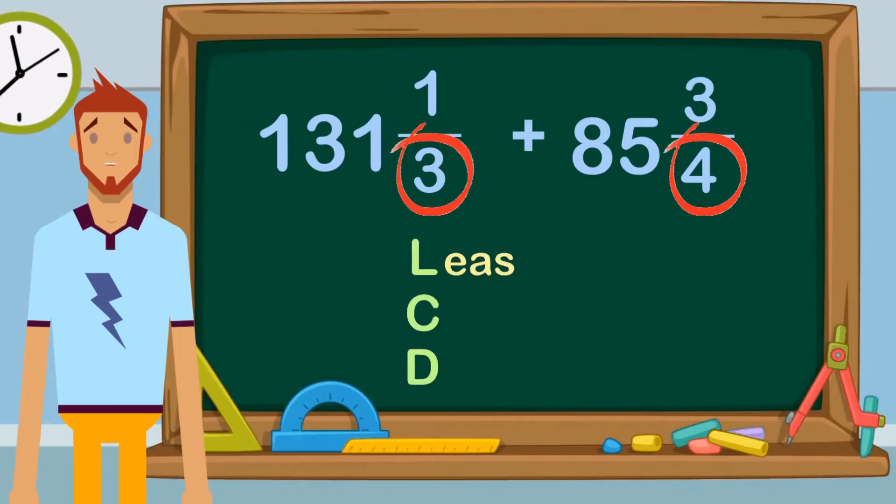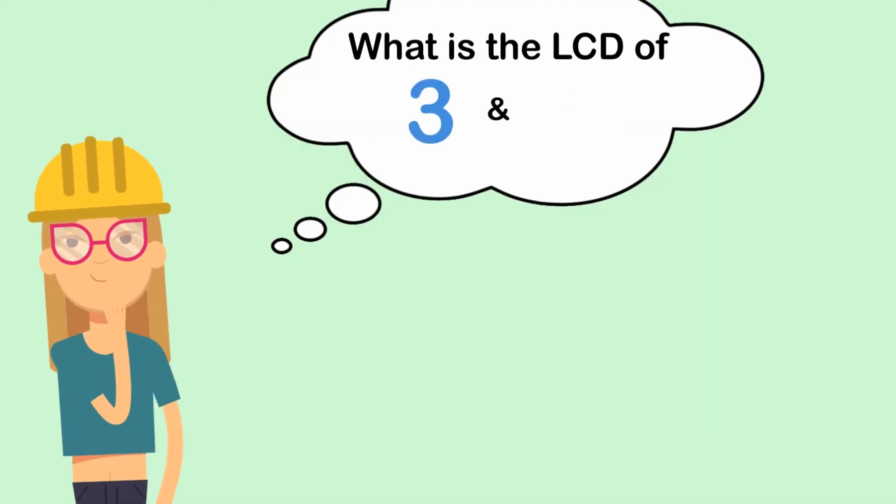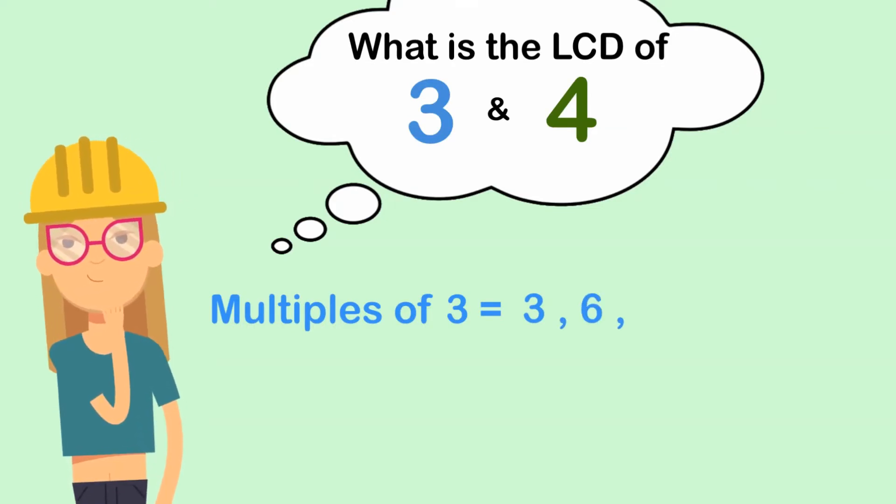To do that, we need to find the least common denominator or LCD between the two fractions. What is the LCD between 3 and 4? Let's find out. Let's start by writing down the multiples of 3: 3×1=3, 3×2=6, 3×3=9, and 3×4=12.